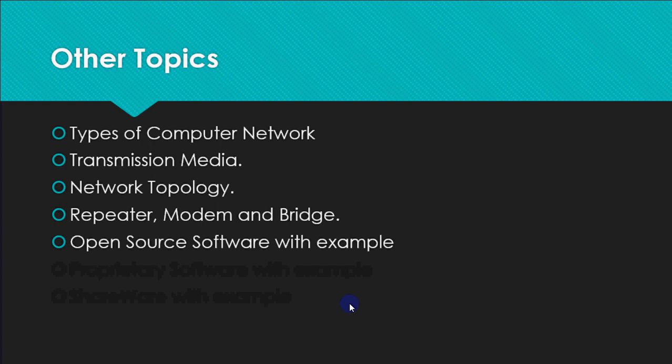Then open source software with examples. Open source softwares are the ones which are available for free on internet along with their source code. Example is Mozilla Firefox. Then you have Linux. Then I have PHP. So these are open source softwares.